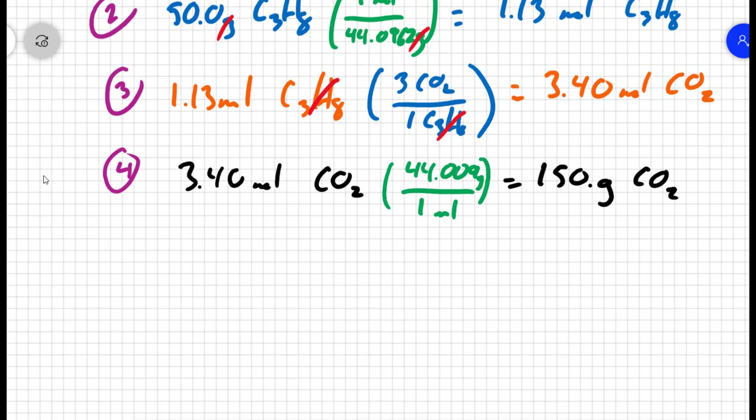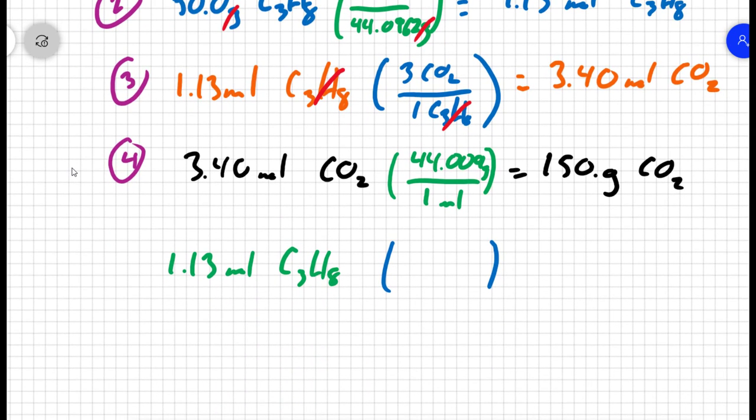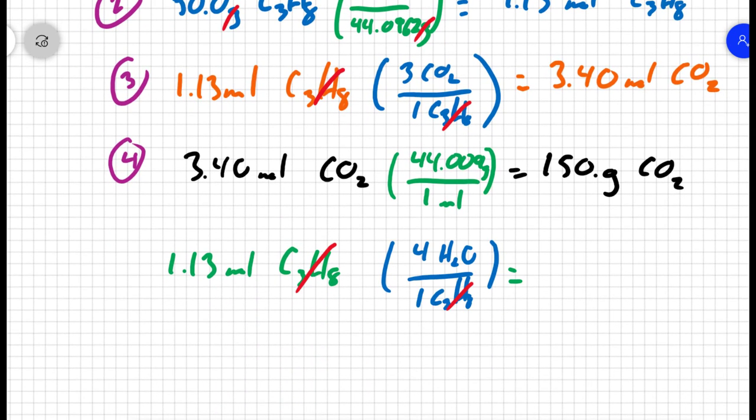So for water, I'm going to say I have 1.13 moles of propane. Now, instead of being a 3 to 1 ratio, there are four waters for every one propane. So 1.13 times 4, I have 4.52 moles of water.